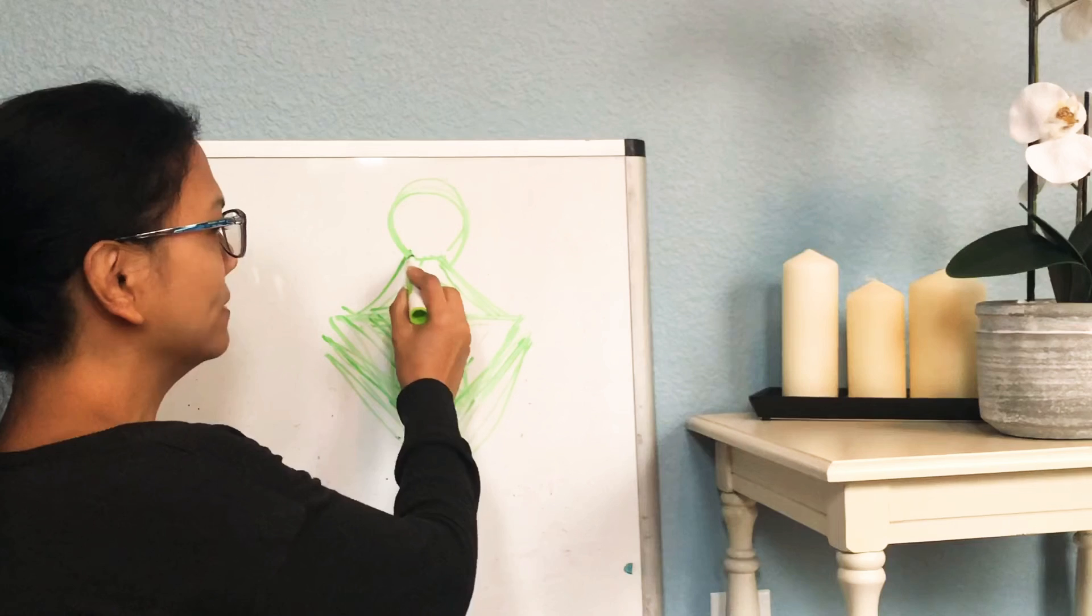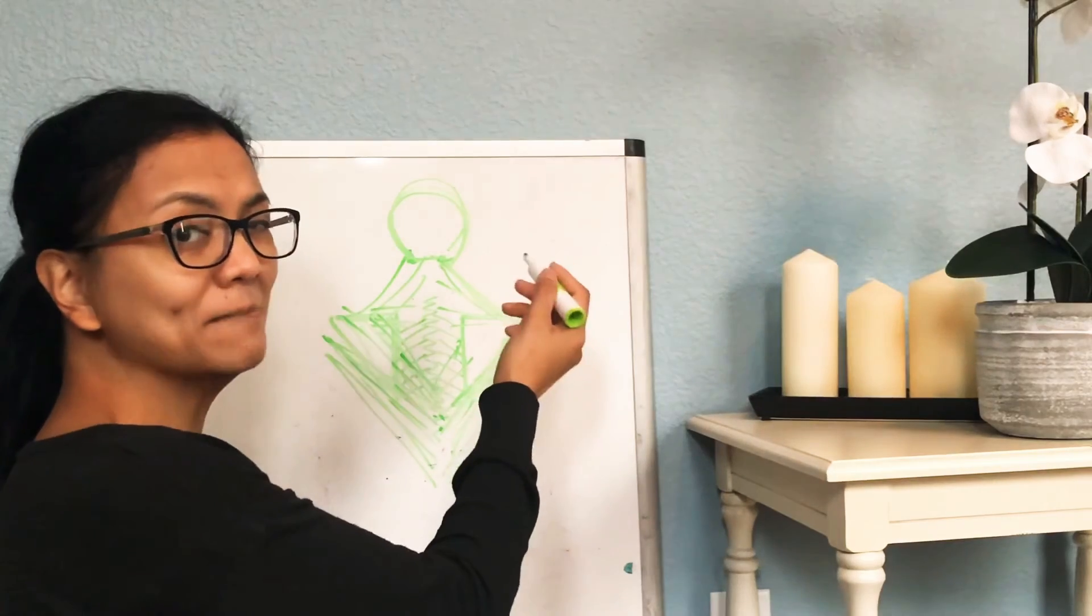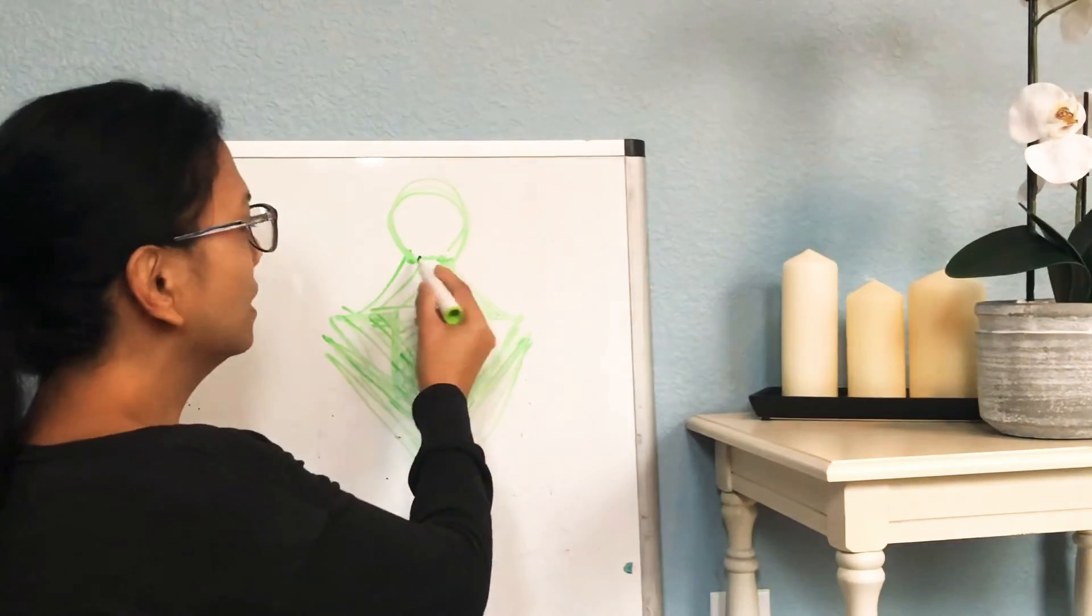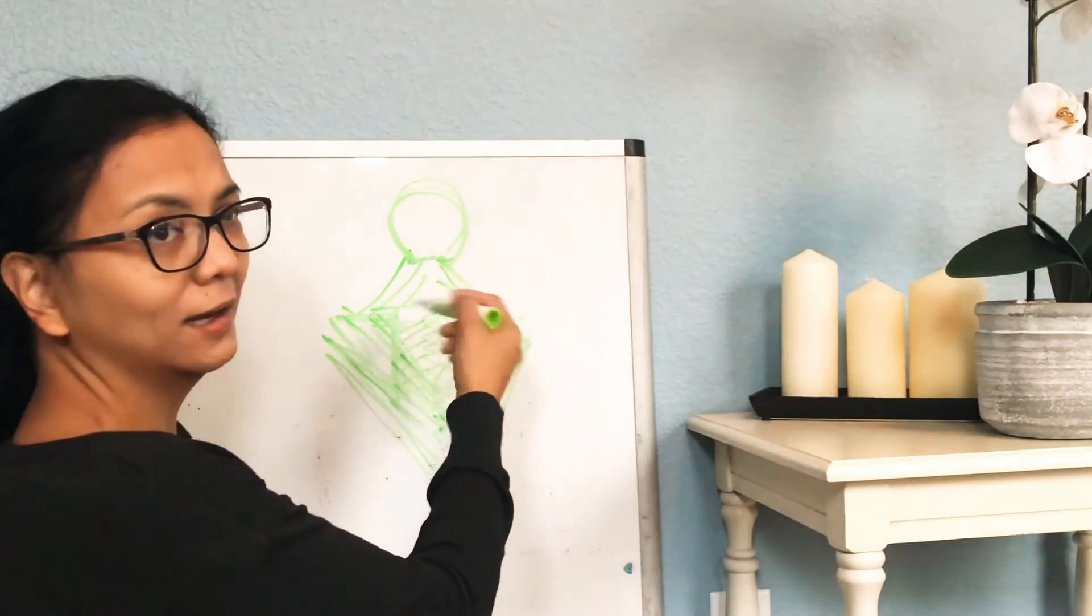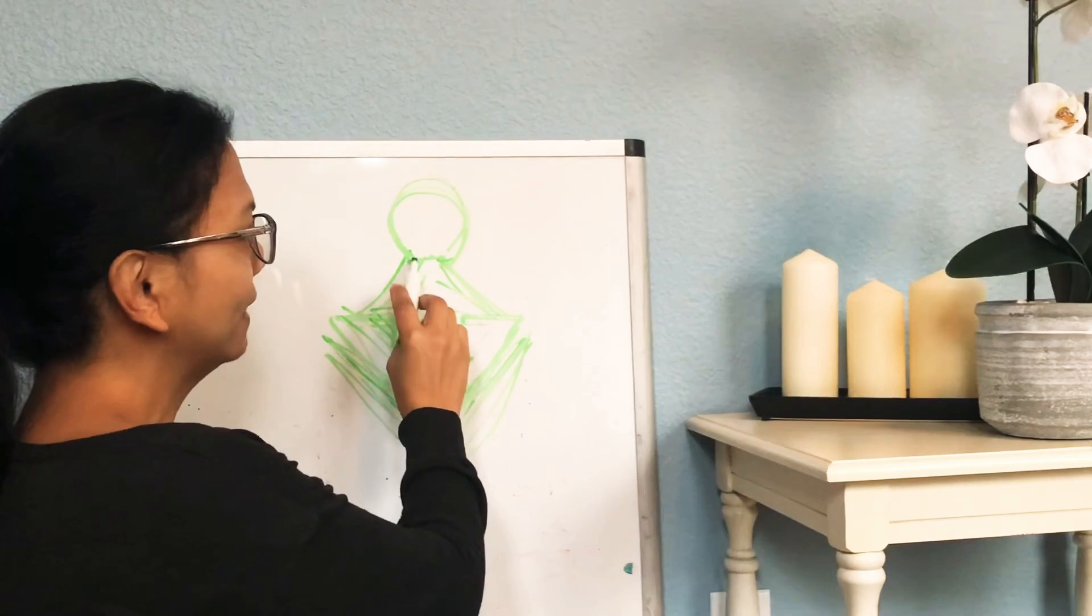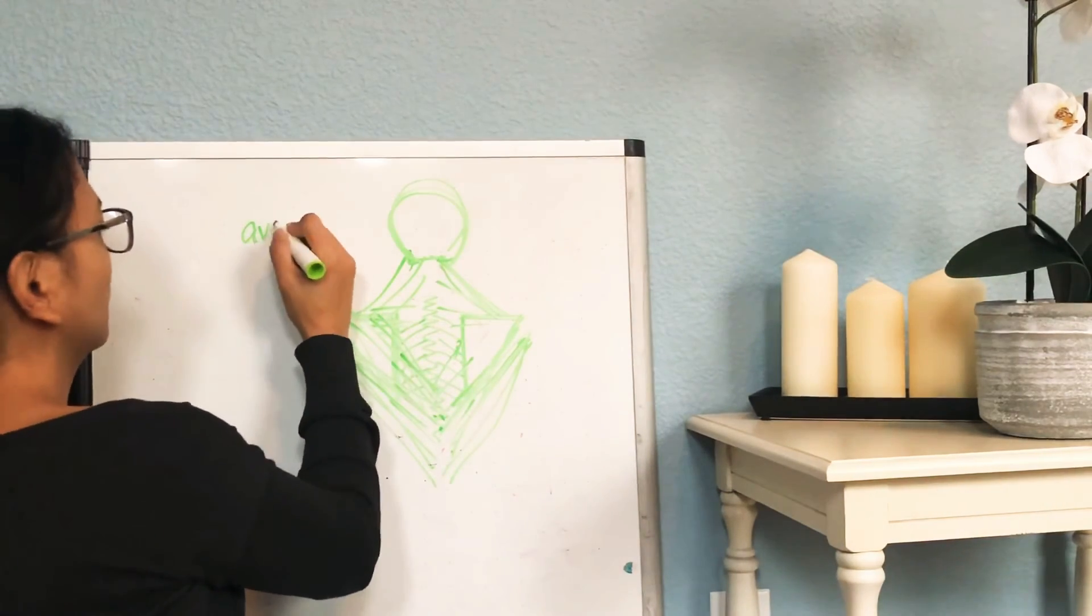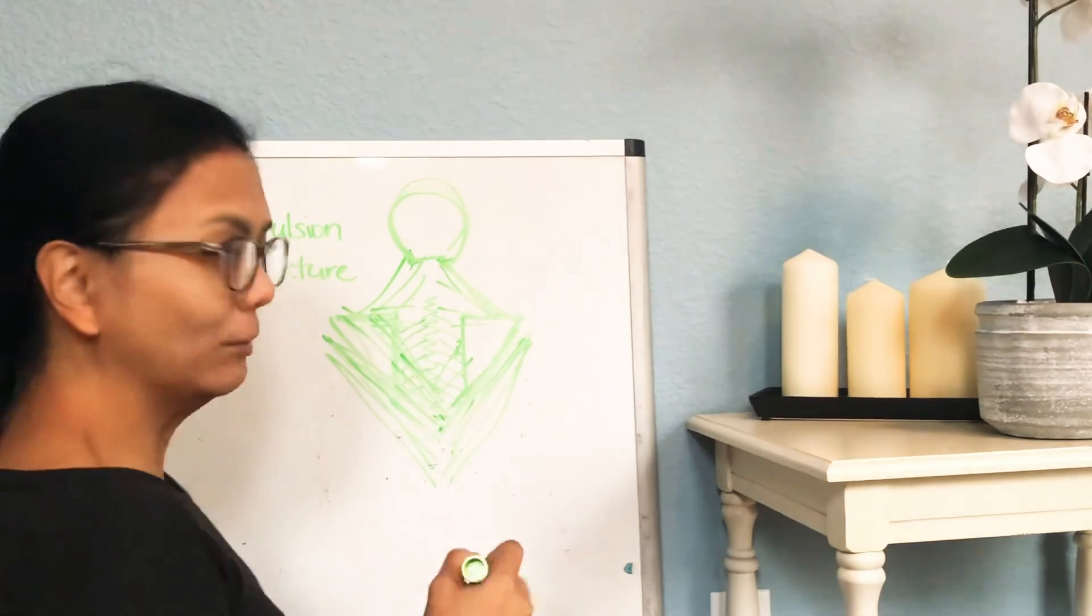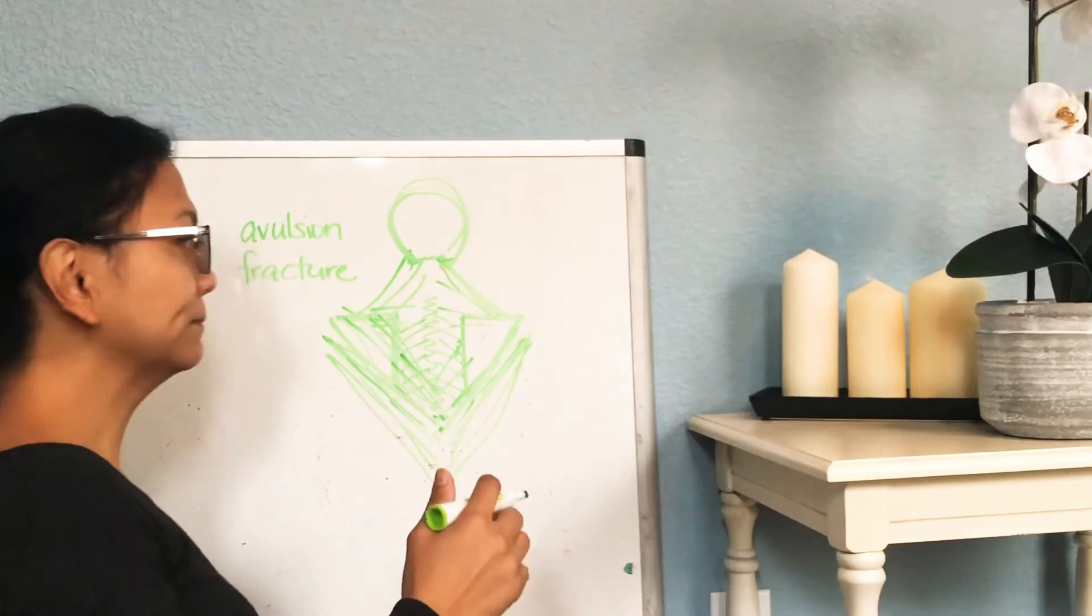What can happen is your bones develop these spurs here because your body thinks that muscle is getting stronger. To protect itself—remember it's smart and dumb—it builds more bone. Eventually the rope snaps. What can happen is it gets so tight that the bone can fracture. It's called an avulsion fracture.